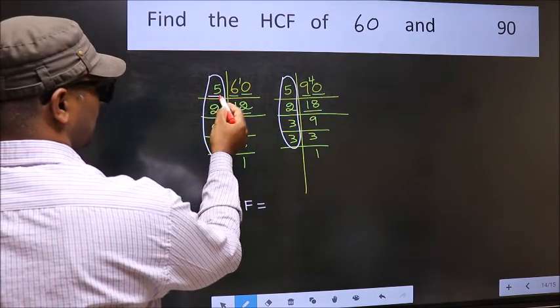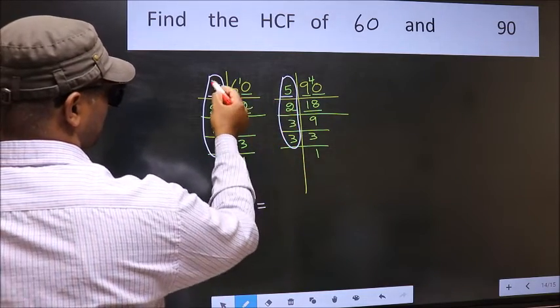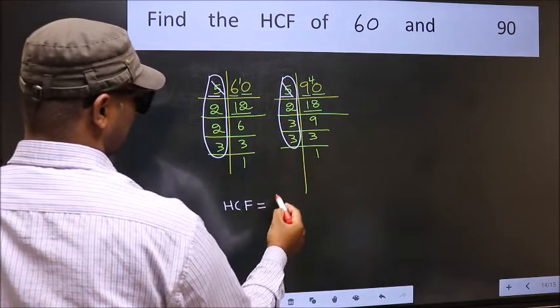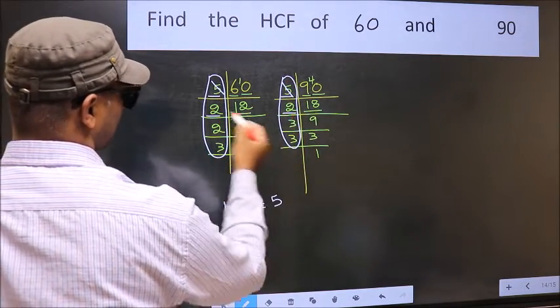Starting with the number 5. Do we have 5 here? Yes. So cut 5 right here. Next number 2. Do we have 2 here? No.